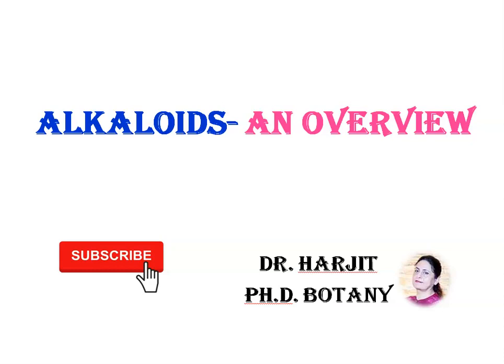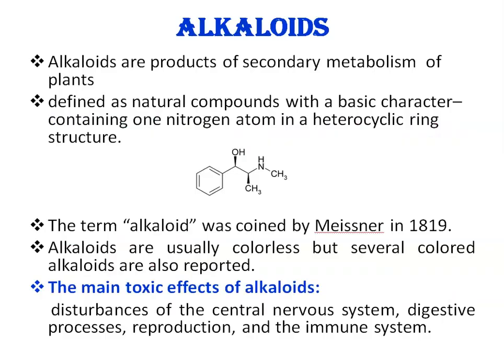Dear students, today we are going to talk about alkaloids. Alkaloids are naturally occurring toxic amines produced by plants, mainly as a defense mechanism to protect themselves against herbivores. Alkaloids are products of secondary metabolism of plants, defined as natural compounds with a basic character containing one nitrogen atom in a heterocyclic ring structure.